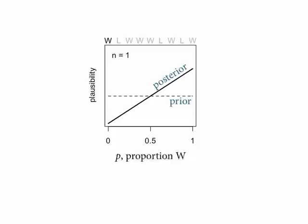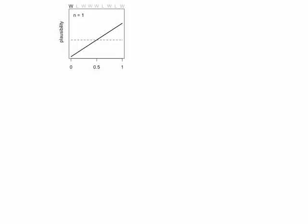In this case, we observed a W, so more posterior probability gets amassed on the higher values of P because we saw some water. You'll notice there's zero plausibility on zero now — because we've seen some water, P can't be zero. You can see the discrete logic still in there. Now we see the land — now we've seen one water and one land — and we get a perfectly symmetrical posterior curve which assigns highest plausibility to 0.5, because half the evidence supports water and half supports land. And the diagonal that was the posterior when n equals 1 is now the prior for n equals 2. You receive each data point and update one at a time.